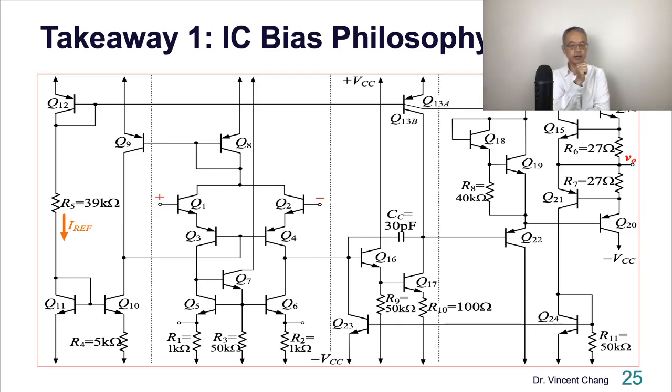First takeaway. We are approaching the end of the lecture video. Let me remind you. Number one, you got to have the IC bias philosophy. You got to see the big picture. What's the philosophy? No large or moderate, even moderate value of resistor. Only small value resistors are welcome in integrated circuit to avoid large area. Number two, no coupling or bypass capacitors. Small capacitors can be accepted like this one, 30 picofarad.